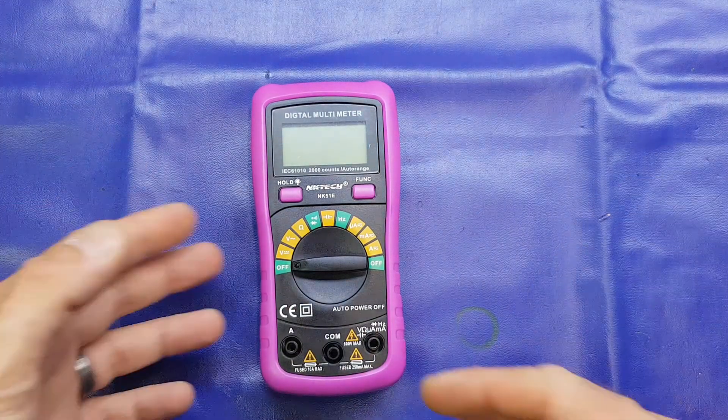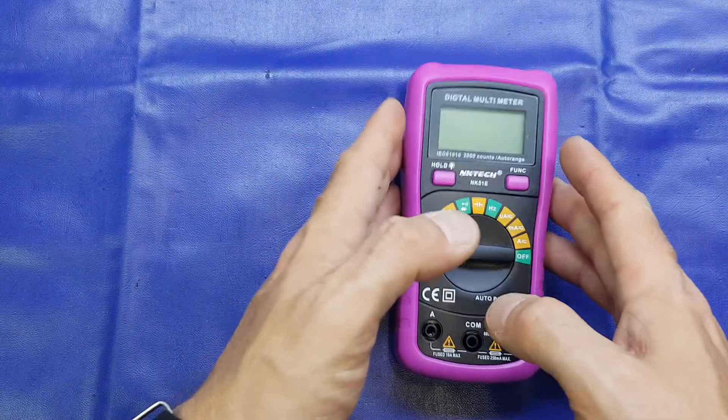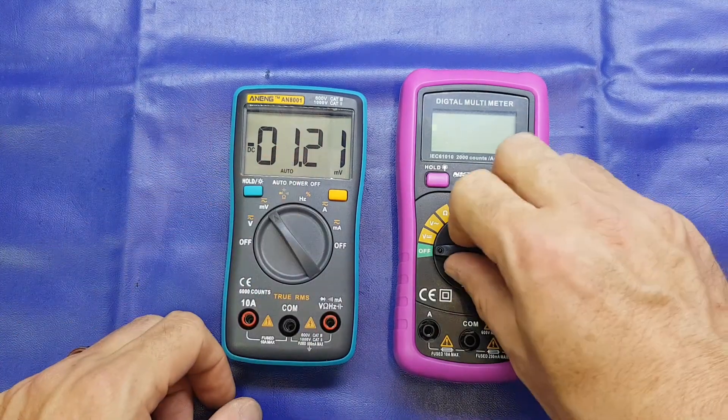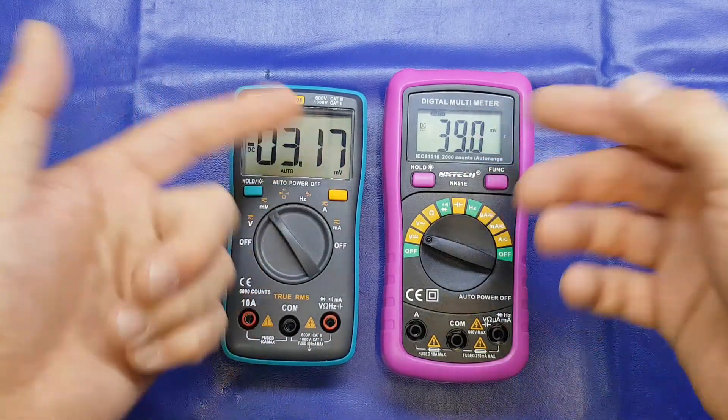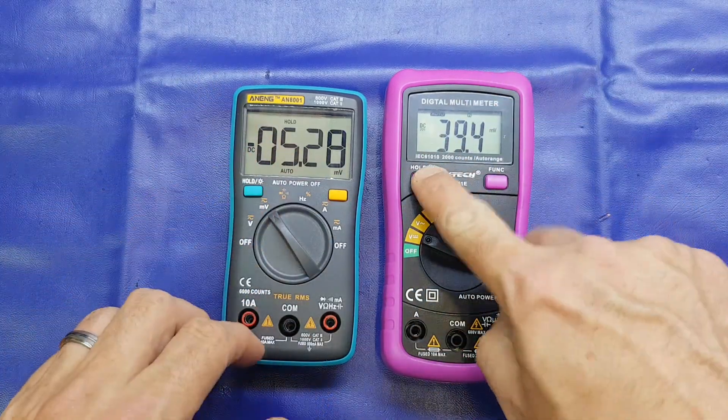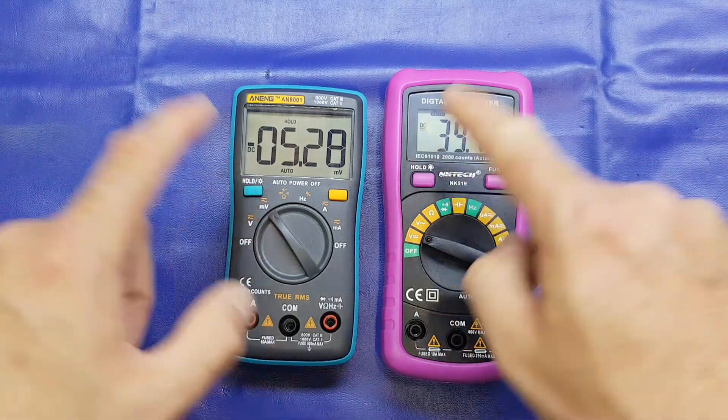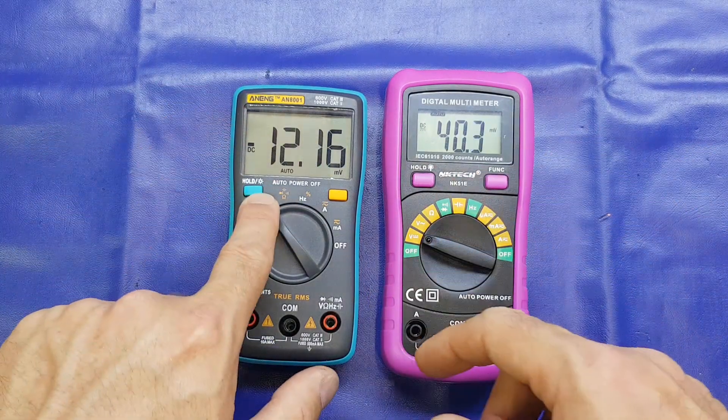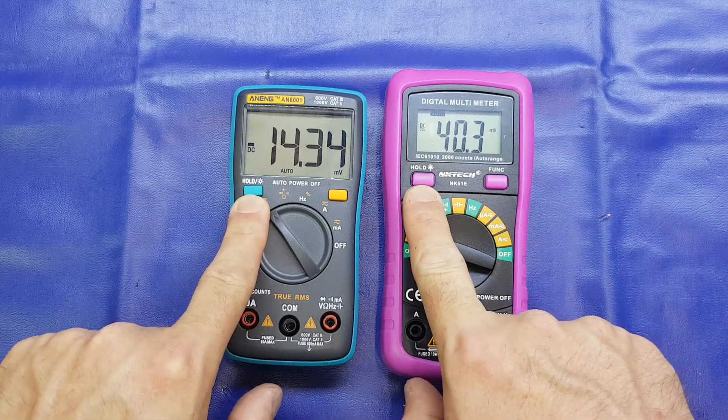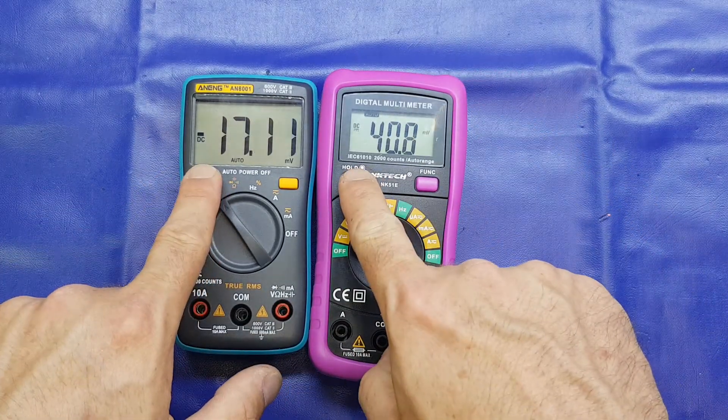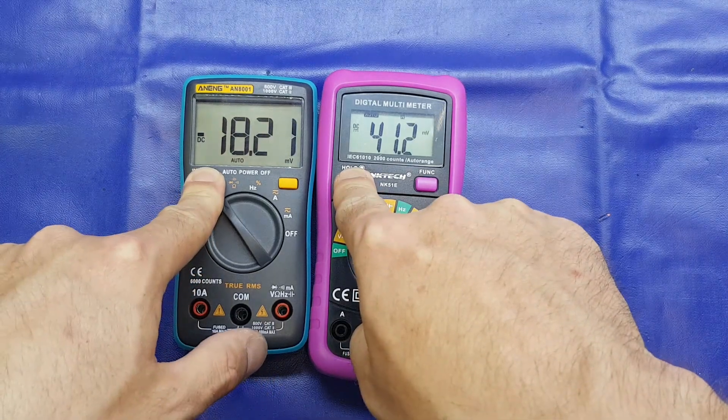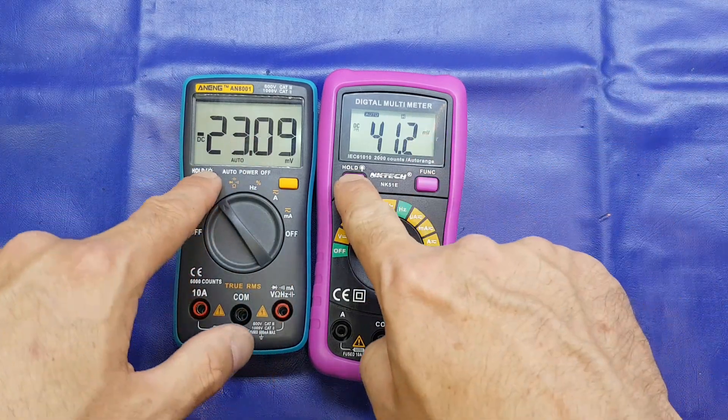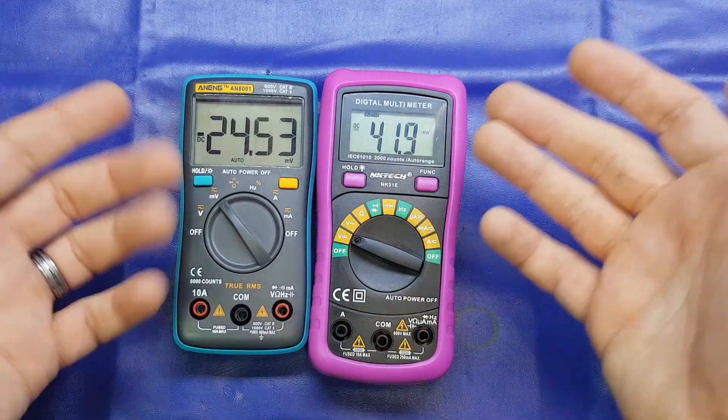We've started off on a negative foot I suppose. The only other thing I don't like about this meter, I'll compare it to the Aneng here. It's on millivolt range here, I'll put this on DC volts. We can see both screens are refreshing. If I press hold, the screens freeze, and if I press it again, they start refreshing. If I want to turn the backlight on, you press and hold the backlight button, same on both meters. If you watch both meters, I'll do them both at the same time. Both backlights have come on, this one's refreshing, this one is on hold.